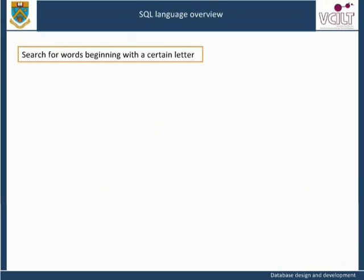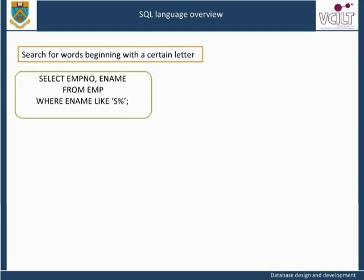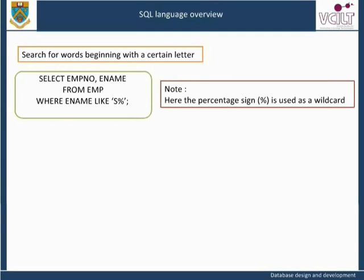Search for words beginning with a certain letter. As an example, we can search for all employees whose name begins with the letter S as follows: SELECT employee number, employee name FROM employee WHERE employee name LIKE 'S%'. Here the percentage sign is used as a wildcard to say that we do not know, or do not wish to specify, the rest of the value of the employee name attribute. The only criteria we are specifying is that it begins with S and may be followed by none, one, or more than one other characters.